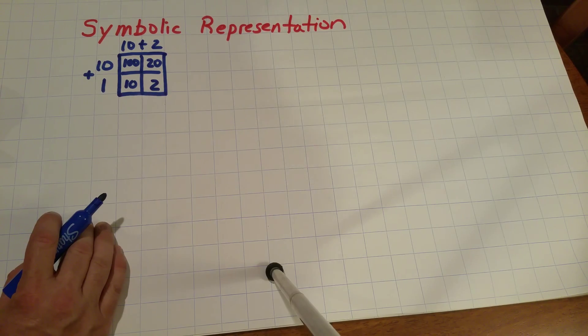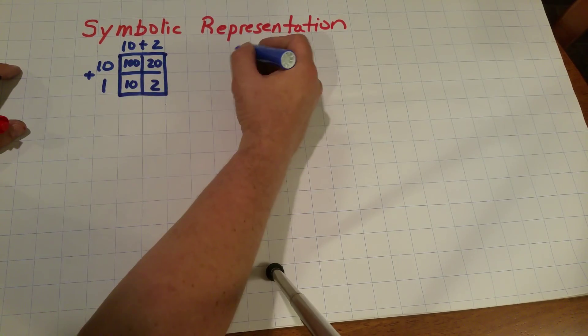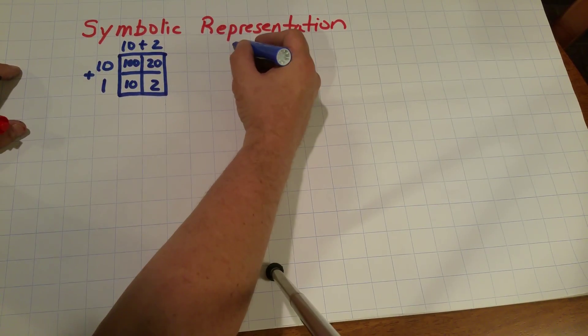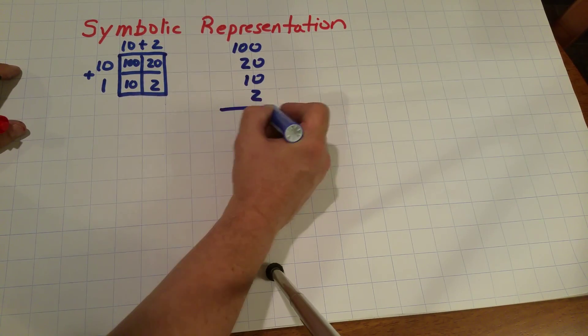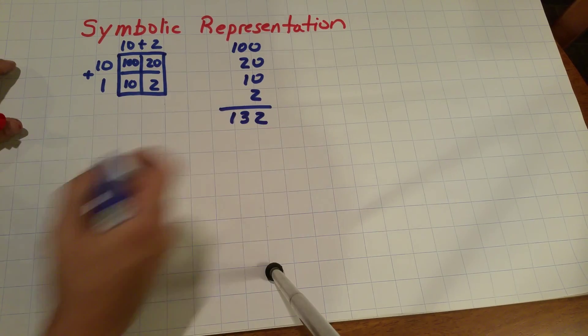Also, this is a partial products method, so to get the answer for this, a student would be expected to say there's 100 plus 20 plus 10 plus 2, and the answer is 132.